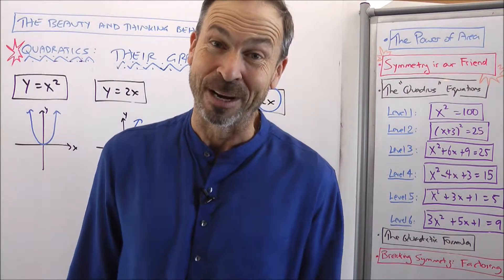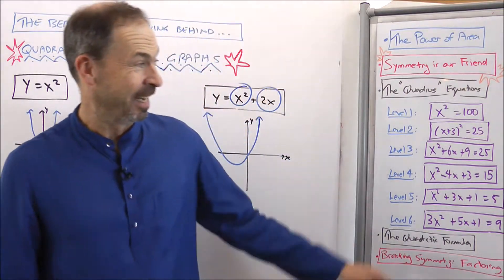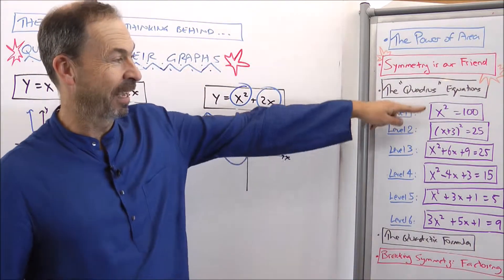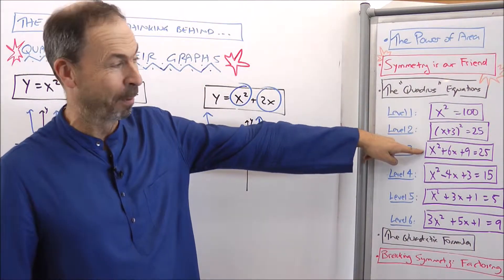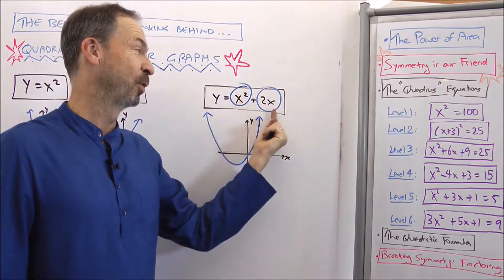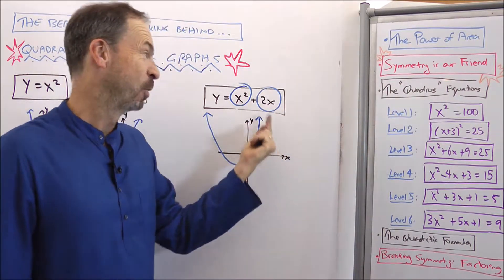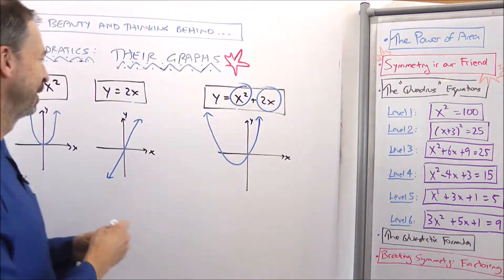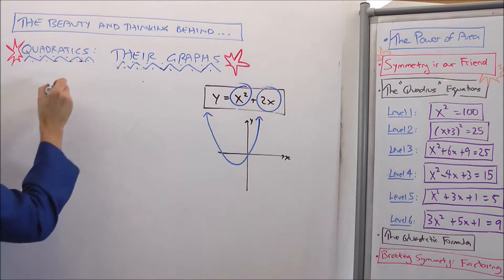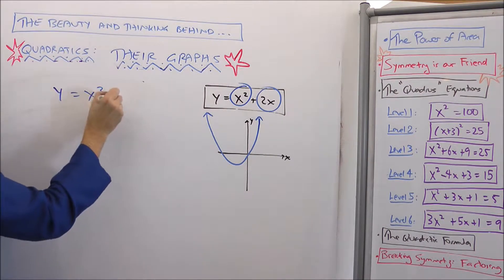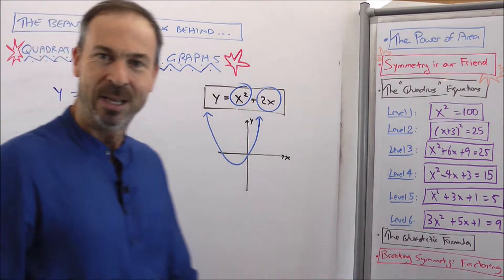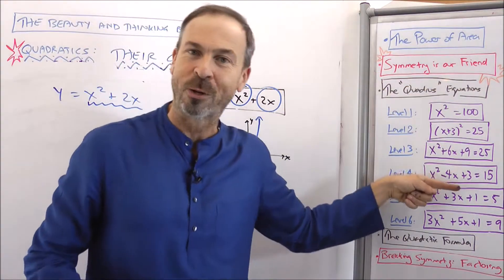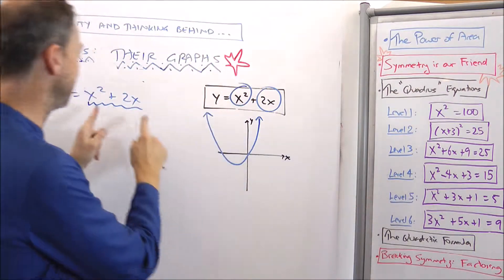I'm going to prove that right now using the algebra of quadratics. It's like turning a level 3 problem back into a level 2 problem. I've got y equals x squared plus 2x. Let me try the quadratics method on the expression x squared plus 2x — let me do the work we're doing in the algebra lectures on this part of the expression.